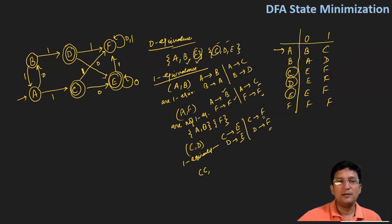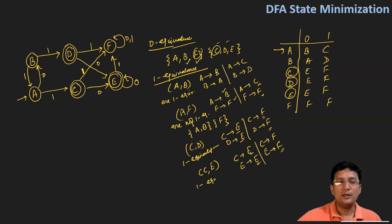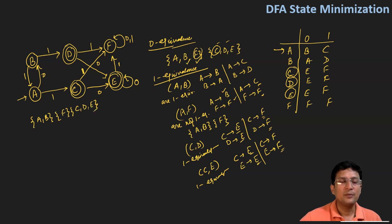Taking another pair C and E: C on zero goes to E and E on zero goes to E — same state. C on one goes to F and E on one also goes to F. E and E are the same, F and F are the same, so they will be in the same set. Therefore C and E are one equivalent. The outcome of one equivalence is: A and B belong to the same set, F is different, and C, D, E belong to the same set.